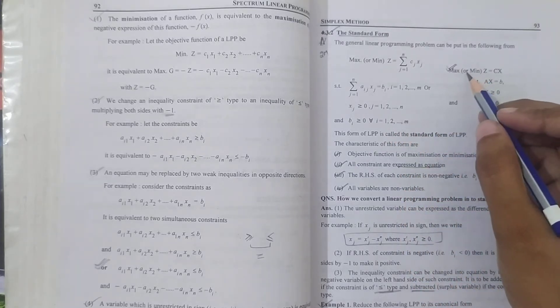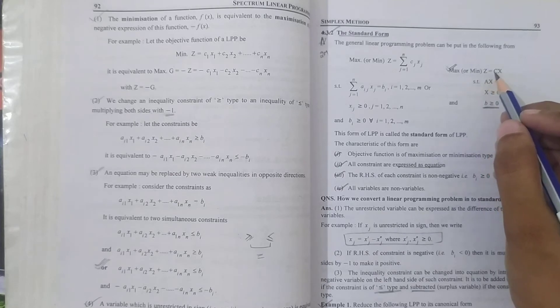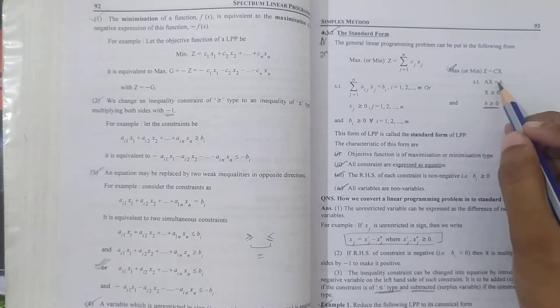That means maximize or minimize z equals cx subject to Ax equals b. Standard form is when our constraints are in equality form.